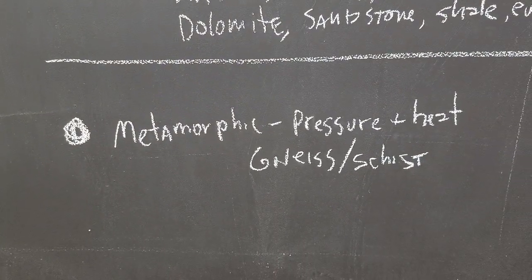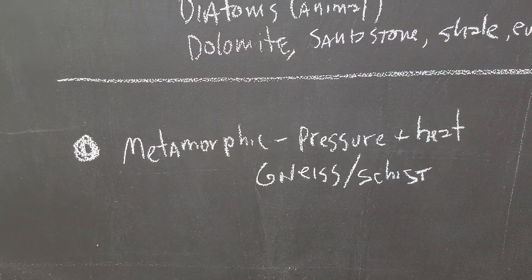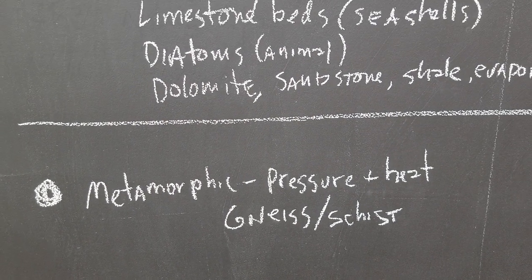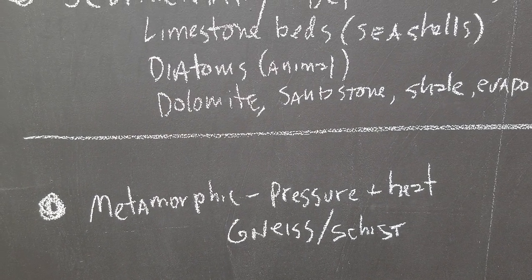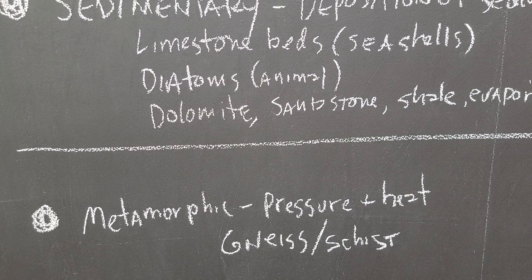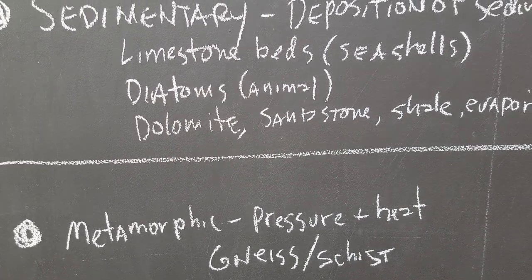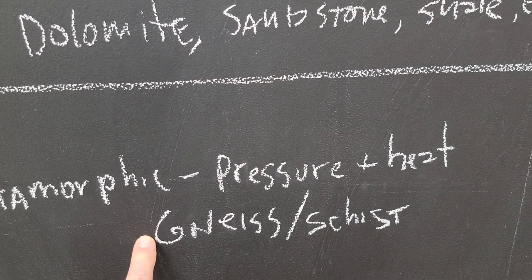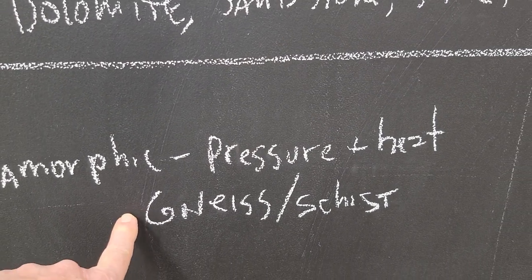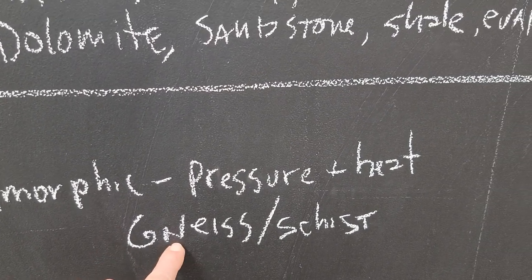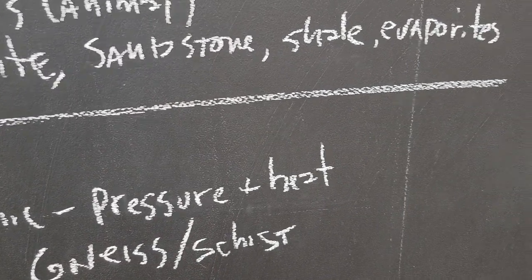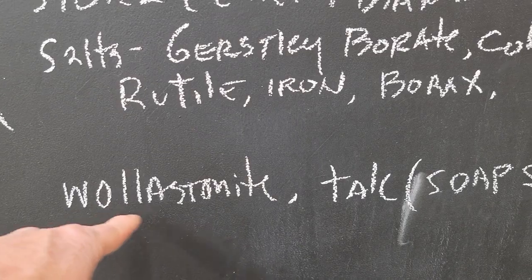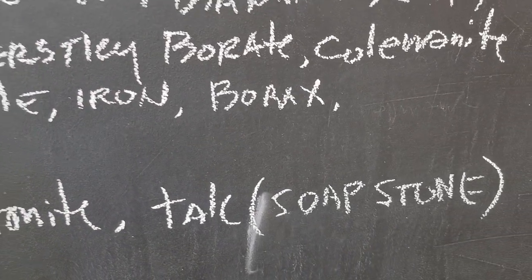The last rock type is metamorphic — it changes. You may have pressure and heat exerted on, say, an igneous rock like granite, and once it sits under pressure and heat it'll form gneiss or schist. Some of the common ones we know about in ceramics are wollastonite and talc, or soapstone.